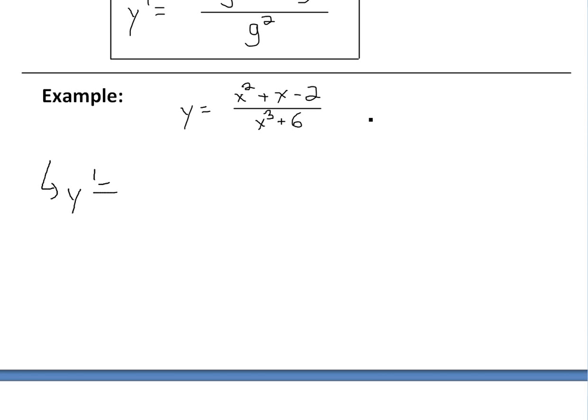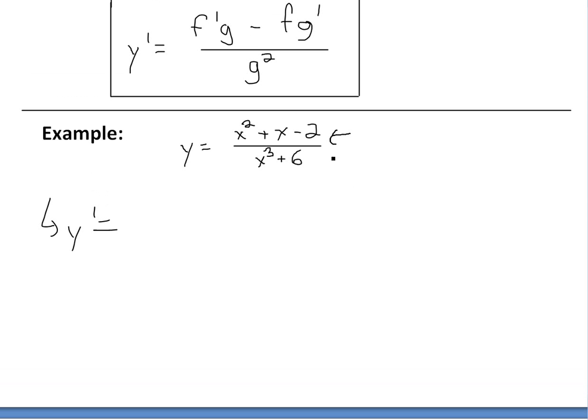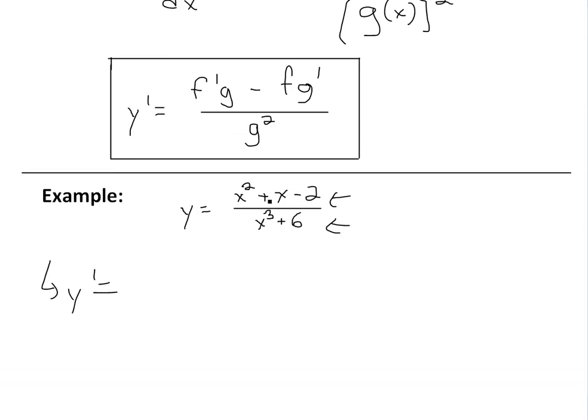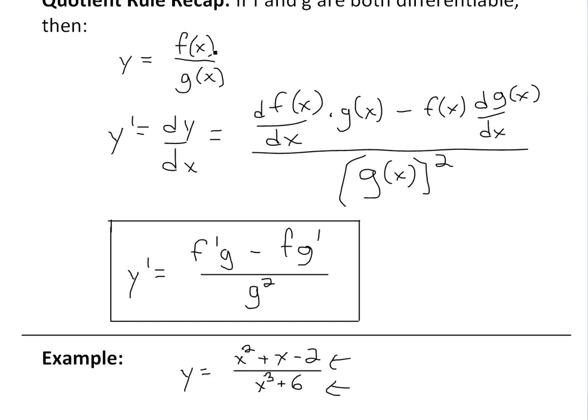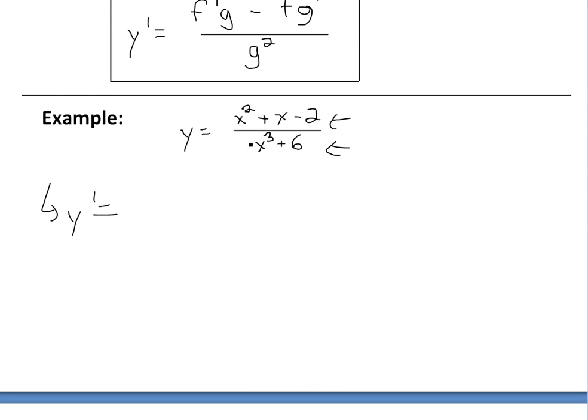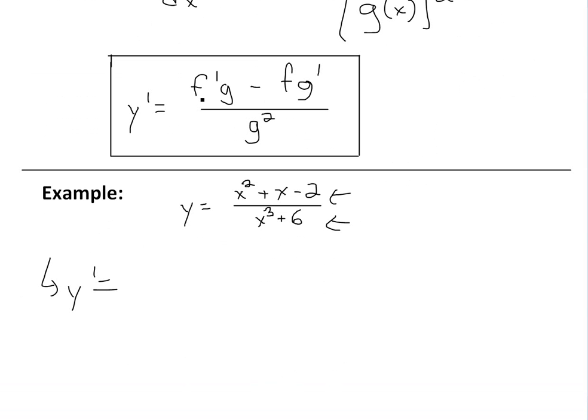So y prime equals... the top is going to be our f(x), and this is the bottom, which is our g(x). We take first, as the rule states, the derivative of the top, and that's going to be: x squared, the derivative of that is 2x, and then plus, the derivative of x is just 1, and the derivative of negative 2 is a constant, so just 0. Then we multiply that derivative of the top by the bottom, x³ + 6.